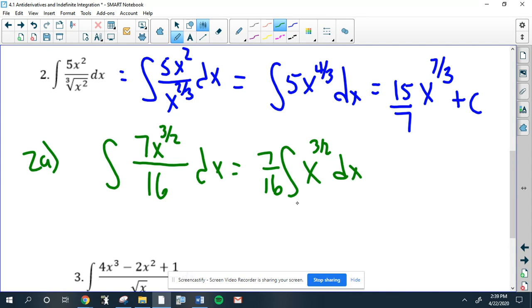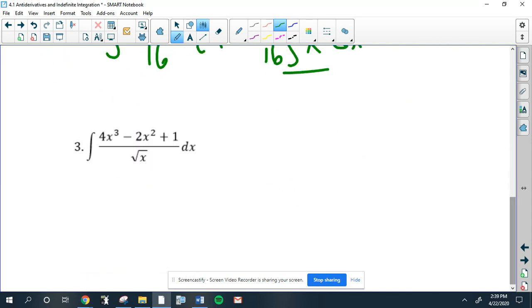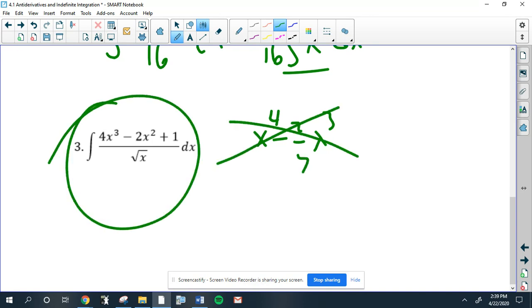So last problem. Now again, what a lot of students like to do early on is just go, oh this is easy, add four, divide by it, minus x to the third times two. But you can't, because there's an x on the bottom and you have to take care of that before you do anything.